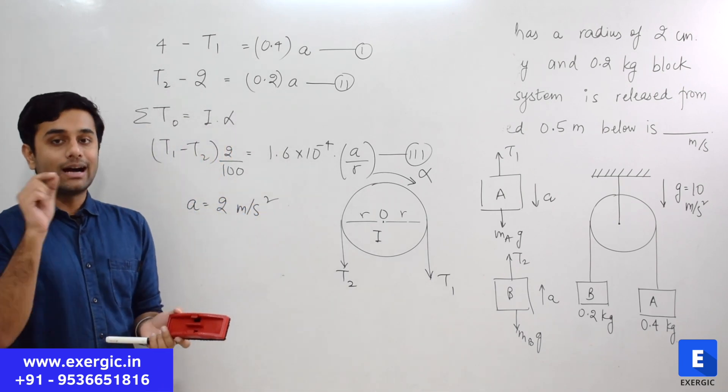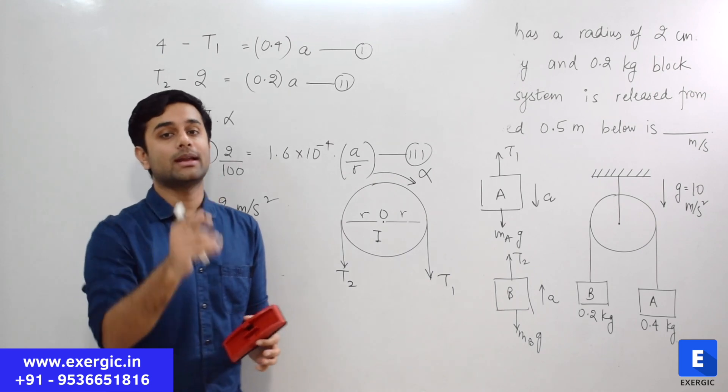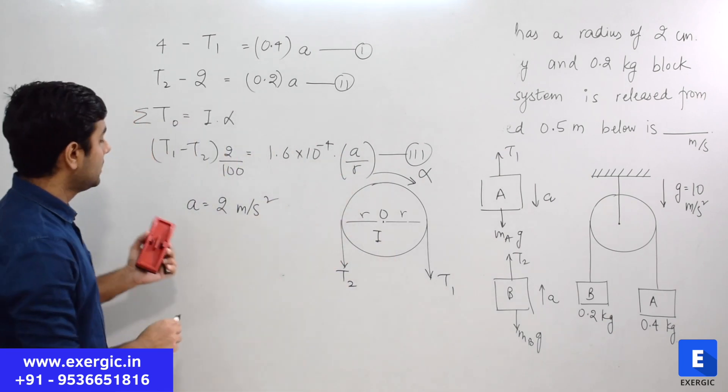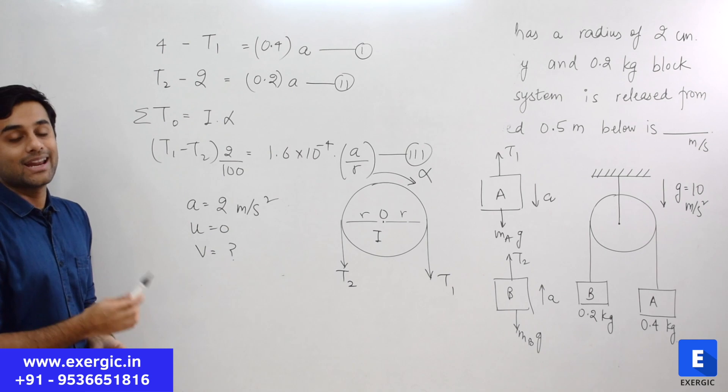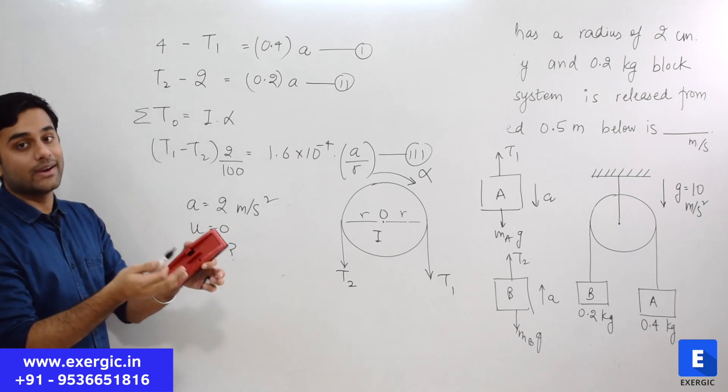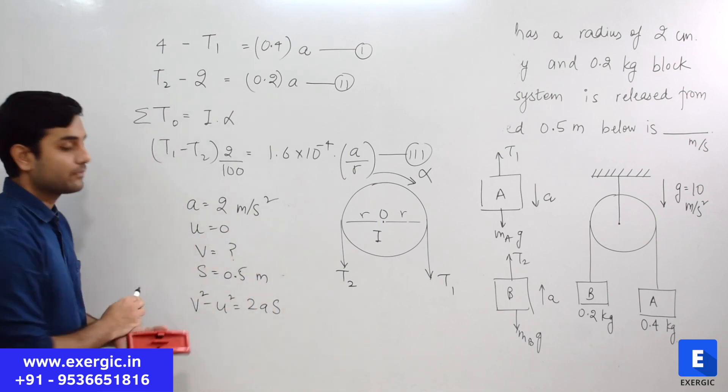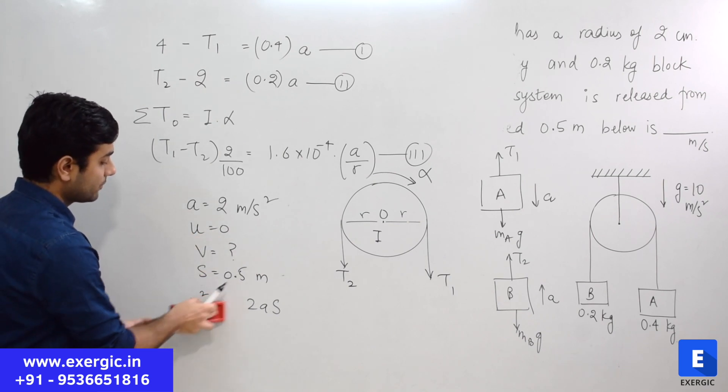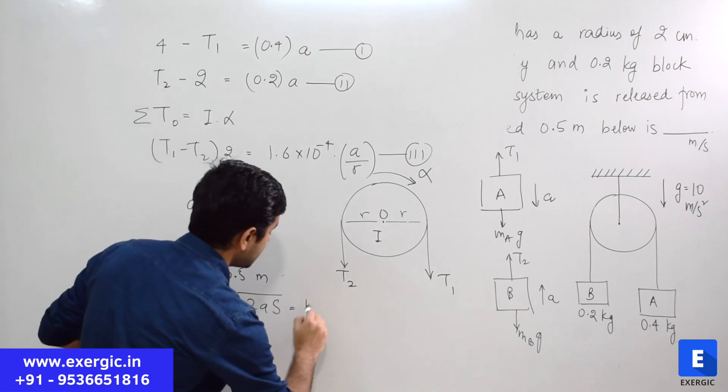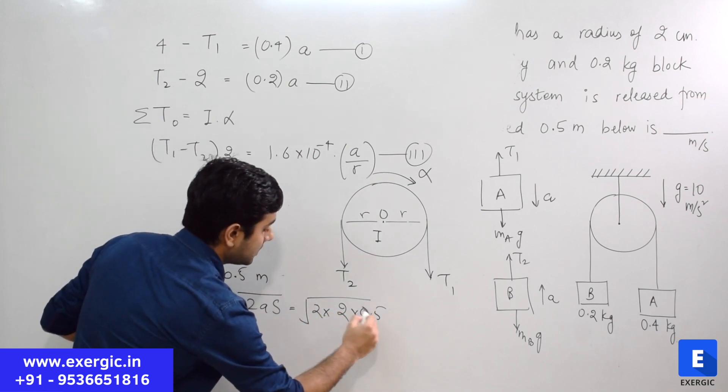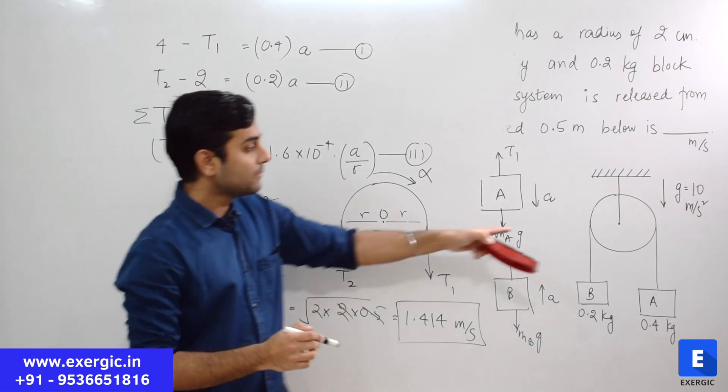But what question asked you? Question asked you what will be the speed of block A when it has moved down by 0.5 meter and it started from rest. So consider only block A. For block A, initial speed was 0. Final speed you have to tell in meter per second. Acceleration is known and how much distance it is allowed to move when we are trying to find out the velocity, that distance is 0.5 meter. We can easily apply V square minus U square equals 2As. U square will be 0 since U is 0. So V will be equal to root 2As. This is V at the end of 0.5 meter. Acceleration is 2, S is 0.5. These will get cancelled. The root 2 will be 1.414 meter per second. This is the required velocity of the block as given in the question.